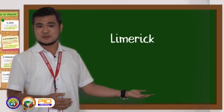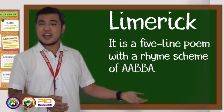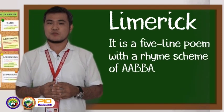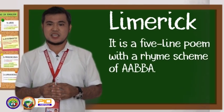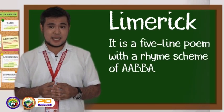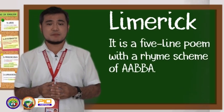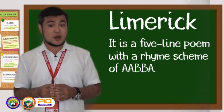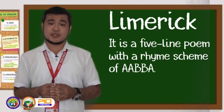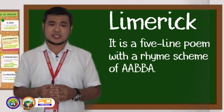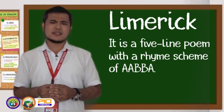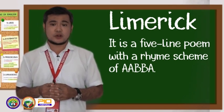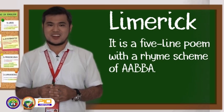The fifth common type is limerick. It is a five-line poem with a rhyme scheme of A, A, B, B, A. Lines 1, 2, and 5 rhyme together, while lines 3 and 4 rhyme with each other.